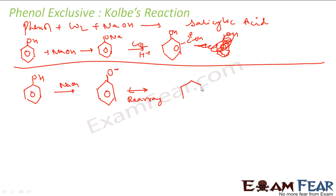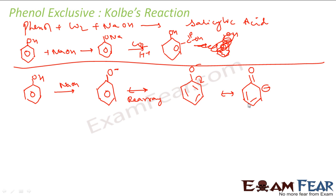What happens is, if we take this O⁻ and form a double bond, breaking this bond into plus and minus, we get a double bond here. This gives us a negative charge on the ring carbon, and this carbon still has H. So we now have an electron-rich carbanion center.